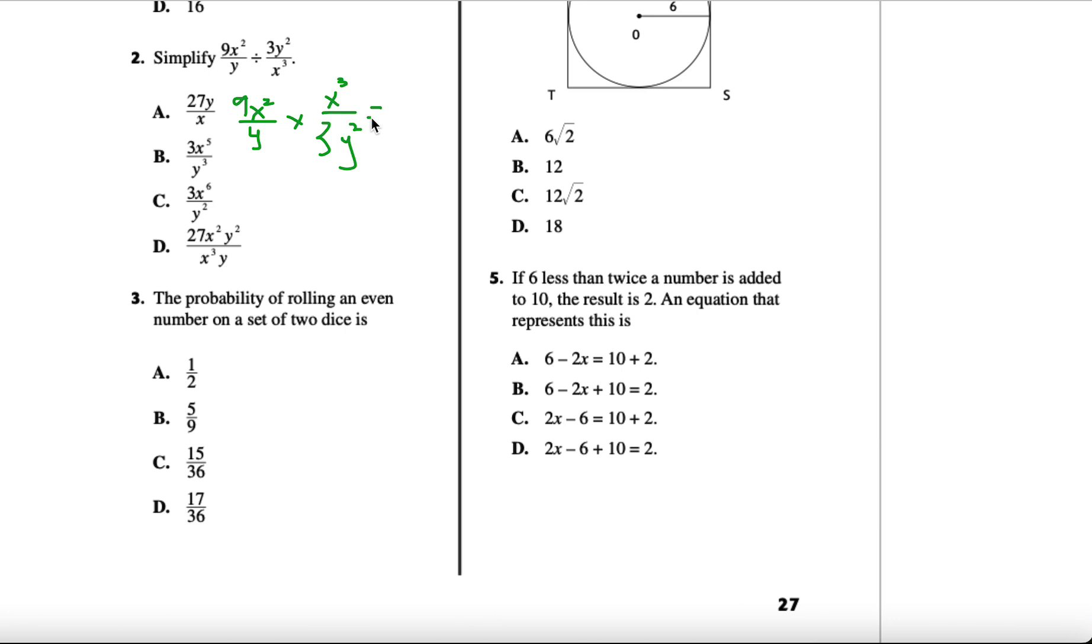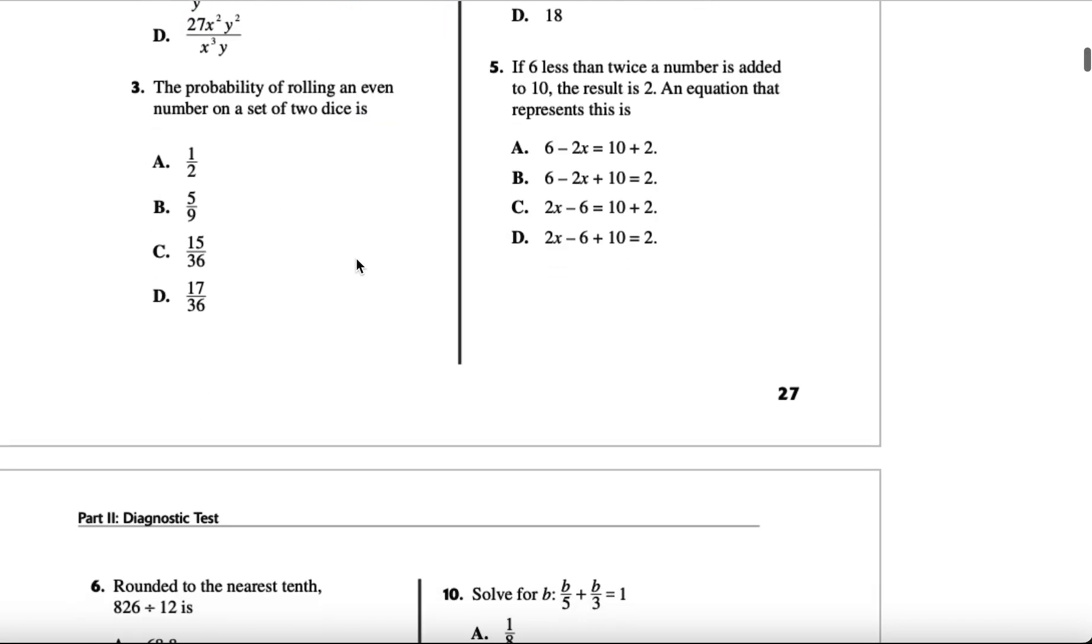So now we have x cubed divided by 3y squared. When we do that, we get 9x to the 5th over 3y to the 3rd. We can simplify this: 3 goes into itself one time, 3 goes into 9 three times. The x and y cannot cancel each other out because they are different variables. When we look to see which one resembles the answer we worked out, B appears to be that.